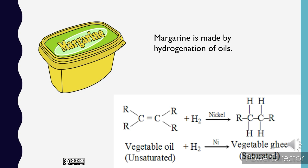Next example is margarine, a product which is widely used in our daily life. Margarine is prepared by hydrogenation of oil which is an addition reaction.